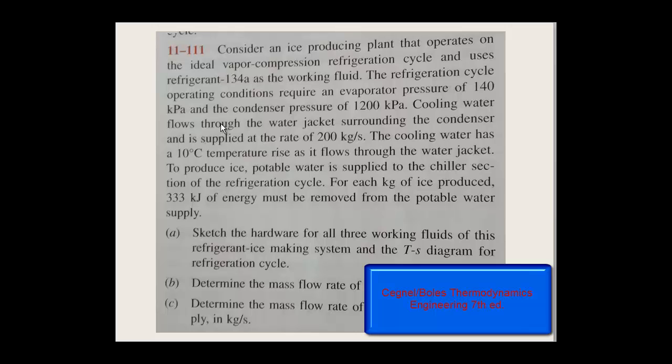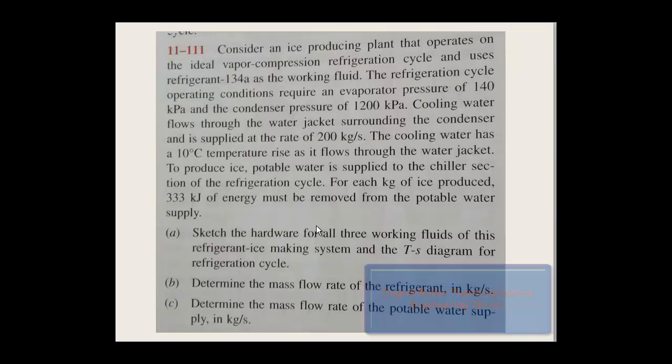So let's start with this problem. We have an ice-producing plant that operates on the ideal vapor compression system and uses R-134a as the working fluid. The refrigeration cycle operation conditions require an evaporator pressure of 140 kPa and condenser pressure of 1200 kPa. Cooling water flows through the water jacket surrounding the condenser at 200 kg/s and has a temperature rise of 10 degrees. To produce ice, potable water is supplied to the chiller section of the refrigeration cycle, and for each kilogram of ice produced, 333 kJ of energy must be removed.